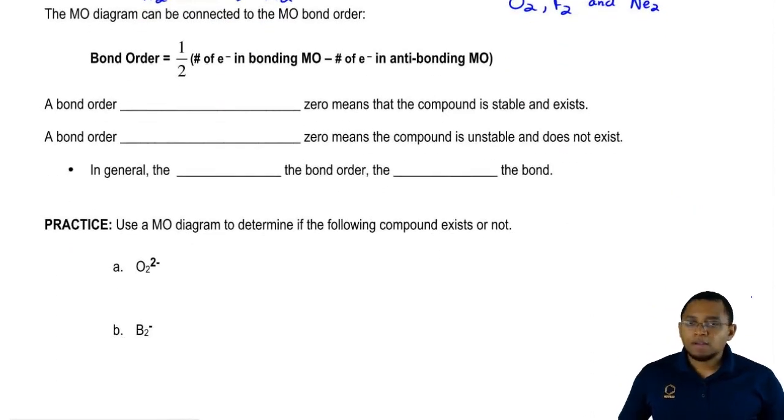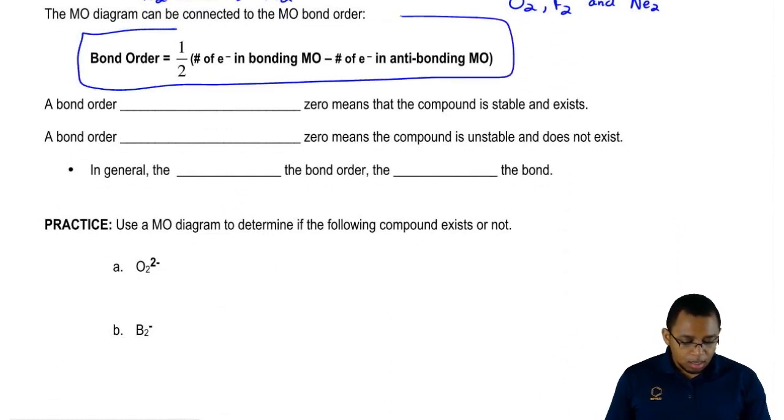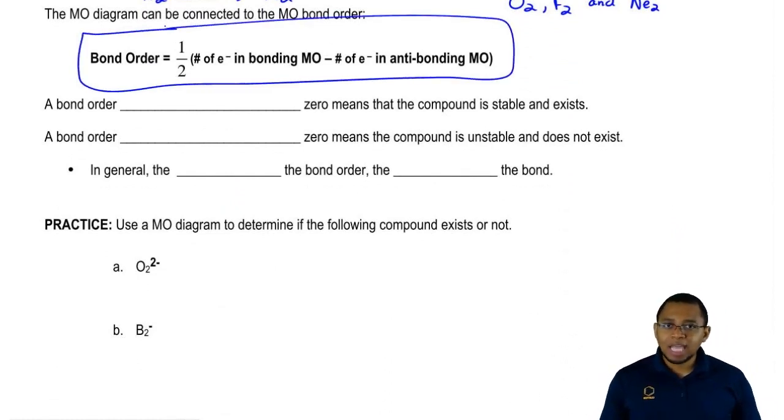Now we're going to say, based on our answers that we get from using this equation, our compound could be stable and exist or it could be unstable and not exist. We're going to say a bond order greater than zero means that the compound is stable and exists.